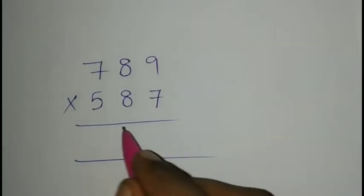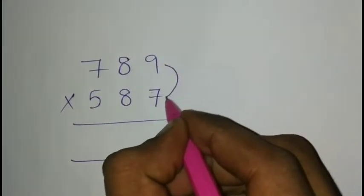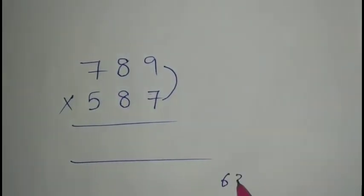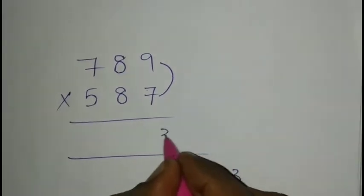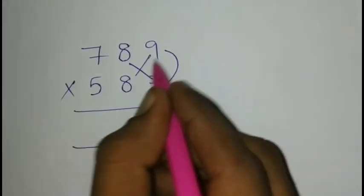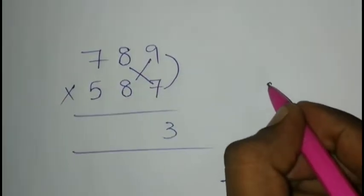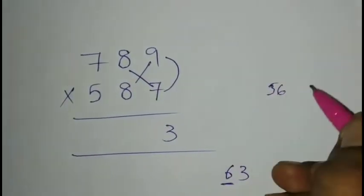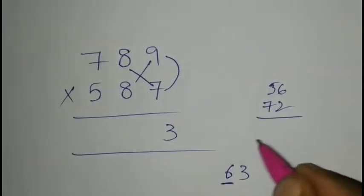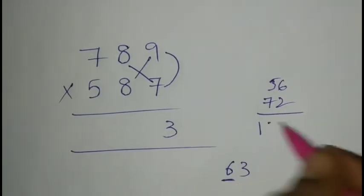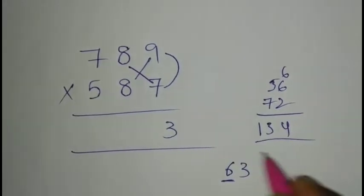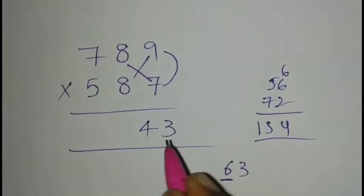Same as it is, last two digits multiply: 9 times 7 is 63. 3, 6 carry. Next 8 times 7, 9 times 8. 8 times 7 is 56, 9 times 8 is 72. Total is 6 carry. Total 134. 4, 13 carry.